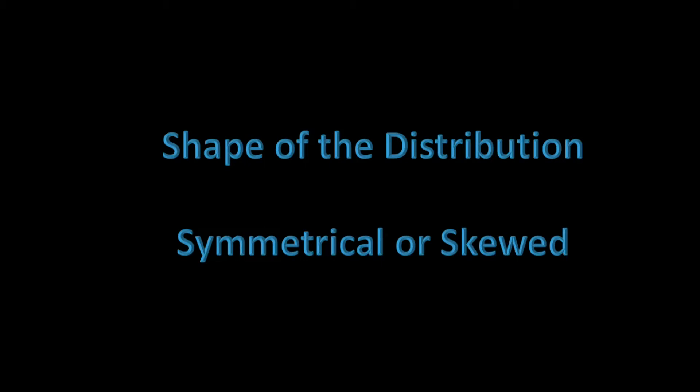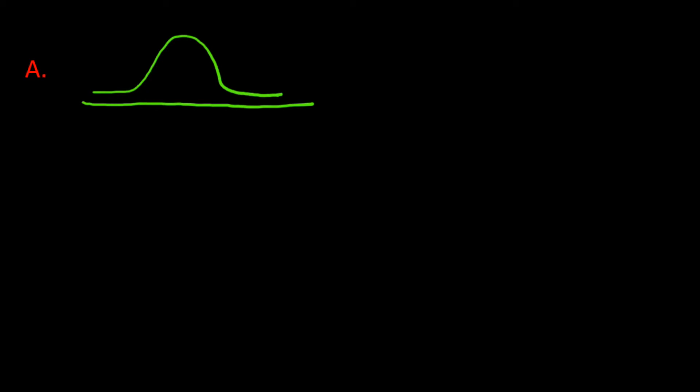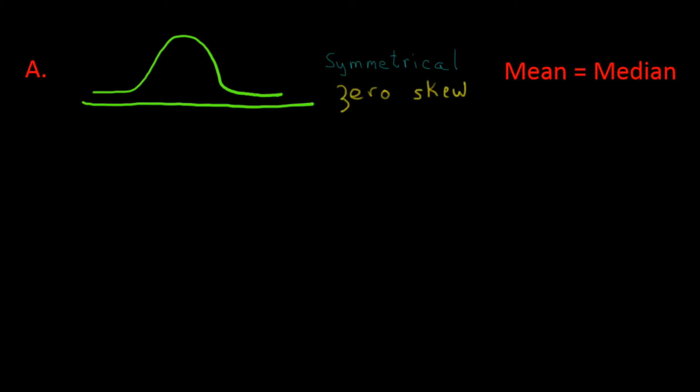Data can be distributed symmetrically, where the low and high values balance each other out, or skewed, where there is an imbalance of high numbers and low values. A symmetrical distribution has a mound or bell-shaped curve where most of the data are in the middle, with fewer and fewer values to the right and left. This type of distribution is considered symmetrical, and the mean is equal to the median. There is zero skew in a symmetrical distribution.